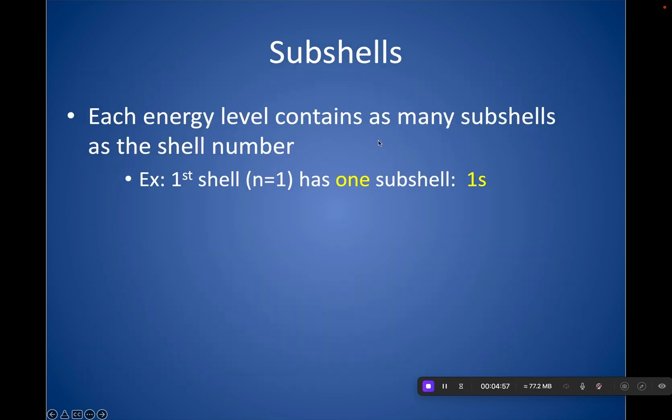And each energy level, so as you get further and further from the nucleus, it makes sense that the diameter of that space is getting bigger. If you're thinking of the energy level like a ring, the diameter of that ring is getting bigger and bigger, so more subshells are able to fit in that area. So each energy level actually contains as many subshells as the shell number. The first shell only has one subshell, so it only has S, which we said could hold a max of two electrons.